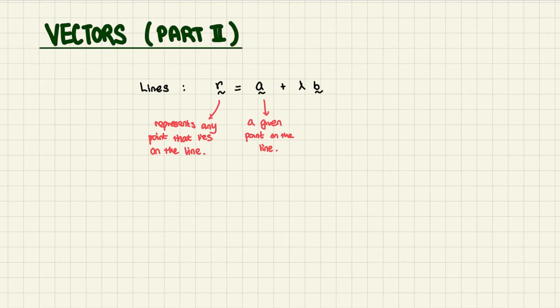Lambda, of course, is just a constant. It's kind of like a variable as well. When you look at vectors, vectors, unlike scalar quantities, have a direction.